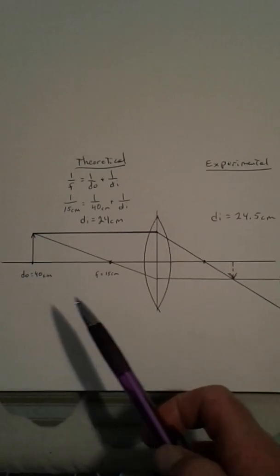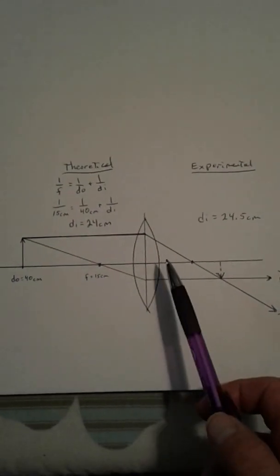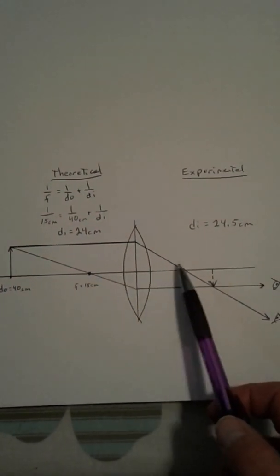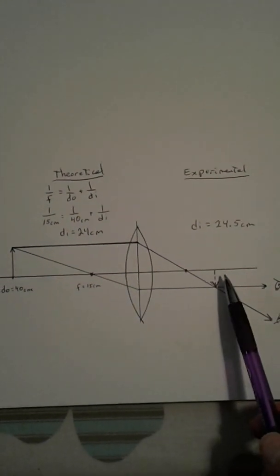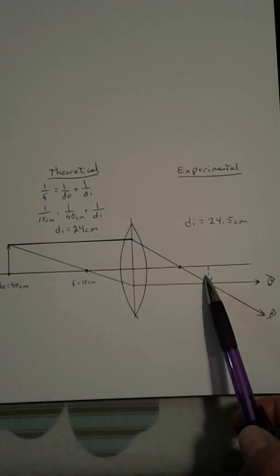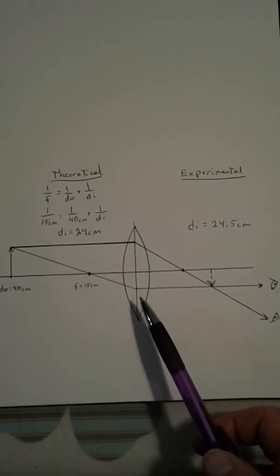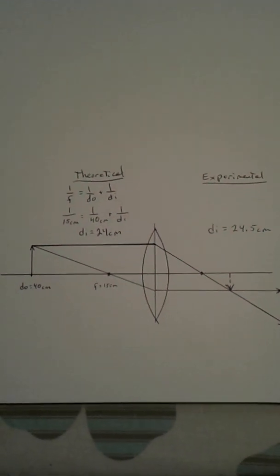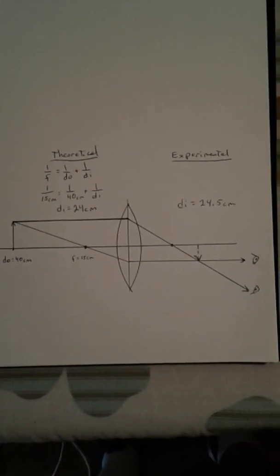Now the diagram should correspond with this. If that's 40 centimeters, and this is 15, this should be 24. I measured it about 20 centimeters according to my scale. So I am off a little bit with the diagram. But the diagram should support the math if it was drawn to scale and it was perfect.